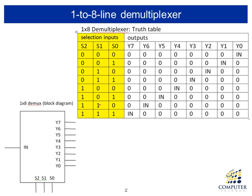The demultiplexer is a completely opposite operation of a multiplexer. We have a single input and then many outputs. Depending on the number of outputs, we have a certain number of selection signals. Depending on the selection signals, the single input is connected to one of the outputs. For example, in a one-by-eight demultiplexer, if the selection input is zero-zero-zero, then the input is directly connected to output zero.